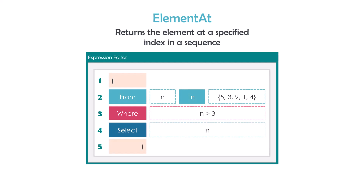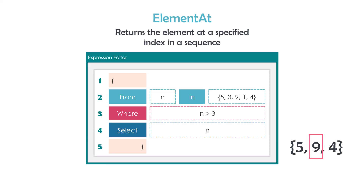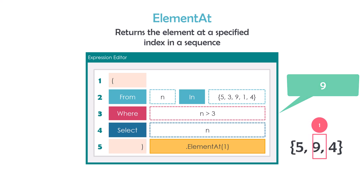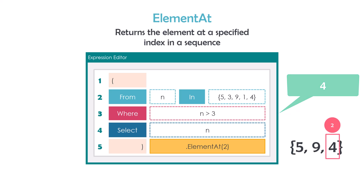Let's see the following query to understand it better. I have the same query to get the numbers which are greater than 3. The result contains three numbers. Assume I want to get the second element — it's the number 9. Since the index starts with 0, the index for the second element is 1. Using ElementAt with index 1, the result will be 9. To get the third element I can set index 2, and I will get the number 4 as result.